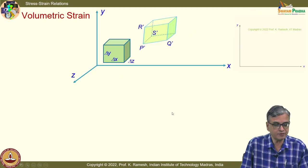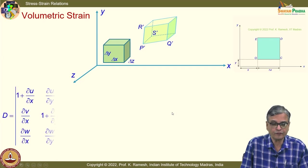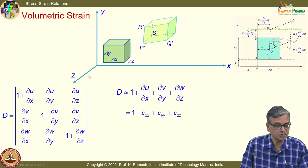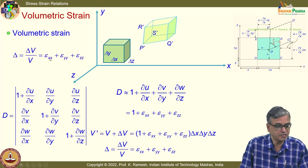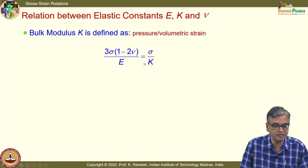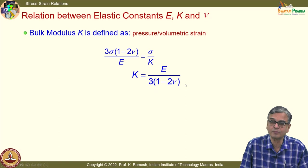On similar lines, we looked at the interrelationship between bulk modulus, Poisson's ratio, and Young's modulus. We developed the concept of volumetric strain — simply the addition of all normal strains: ε_xx + ε_yy + ε_zz. Bulk modulus is pressure divided by volumetric strain. We get the expression 3σ(1 − 2ν)/E = σ/K, and from this K = E / [3(1 − 2ν)].